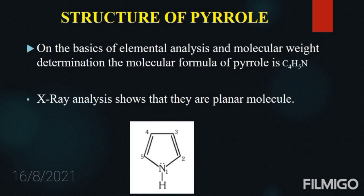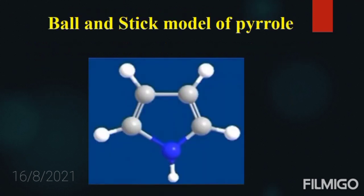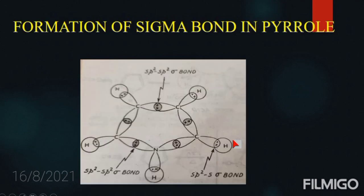The next part of the discussion is the structure of pyrrole. Based on elemental analysis and molecular weight determination, the molecular formula of pyrrole is C4H5N, and X-ray analysis shows it is a planar molecule. In this slide, we have shown the ball-and-stick model of pyrrole, where the blue ball is nitrogen with its associated hydrogen, the gray balls are carbon atoms, and the white balls are hydrogen atoms. In pyrrole, the nitrogen atom and the four carbon atoms are sp2 hybridized.